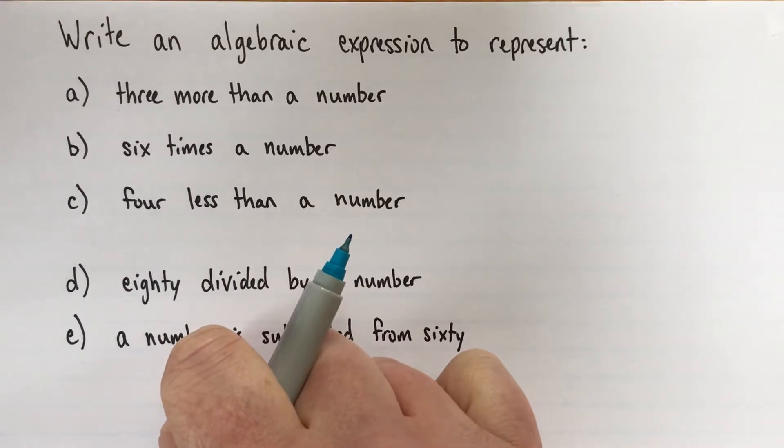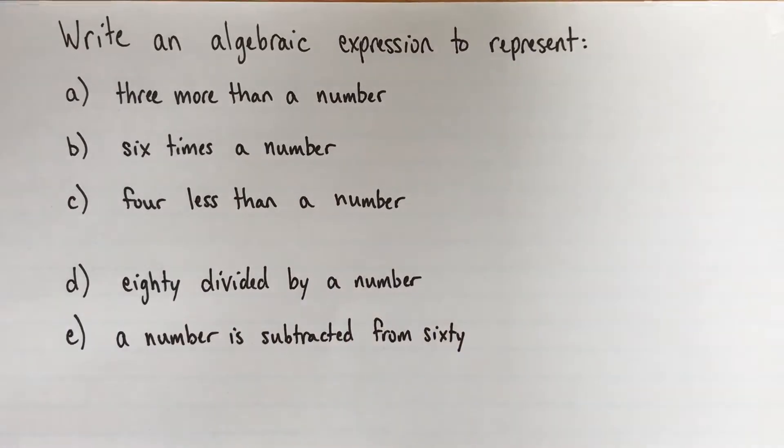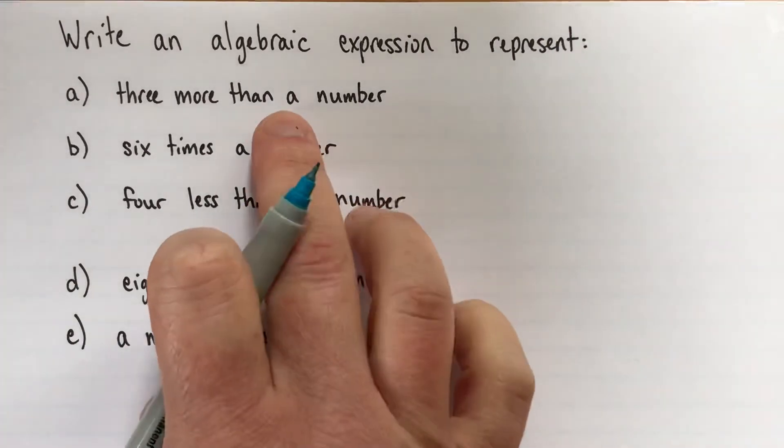So three more than a number. We need to think, what does it mean if we're finding three more than something? Could we express that with an operation? If you imagine maybe three more than ten, that would be thirteen. That's the same as ten plus three. So it's going to be the same here.